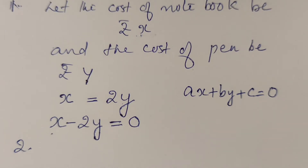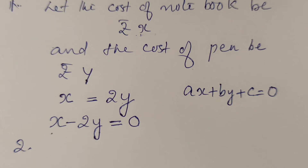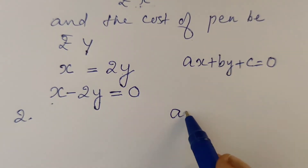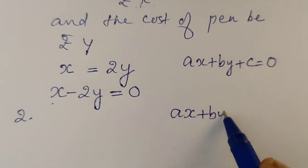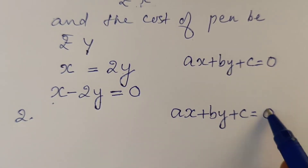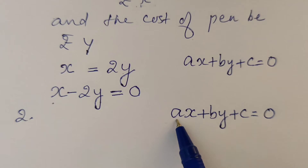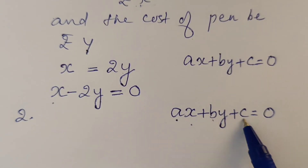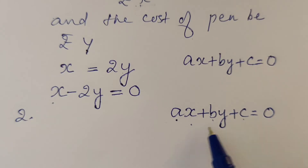Express the following linear equations in the form ax plus by plus c equal to 0 and indicate the values of a, b, and c in each case. The standard form of a linear equation in two variables is ax plus by plus c equal to 0, where a is the coefficient of x, b is the coefficient of y, and c is the constant term.